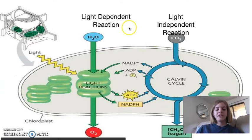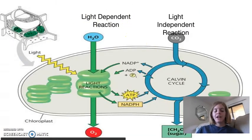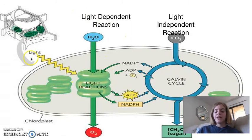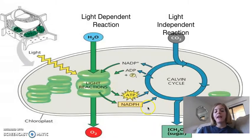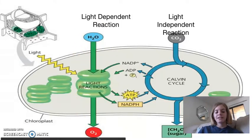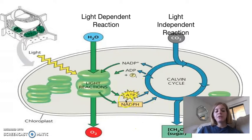The light dependent reactions, just as a reminder, have already occurred in the thylakoid. They required light and water, and the result of that is those electrons are energized by the light and they get passed through an electron transport chain producing ATP and NADPH. The water also splits and forms oxygen gas. So the ATP and NADPH are really where we want to focus today because those move on to the Calvin cycle, which will, with the input of carbon dioxide, produce sugar for us.